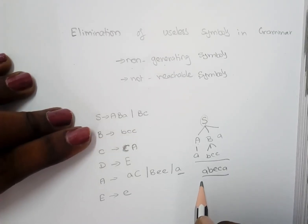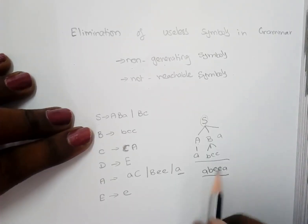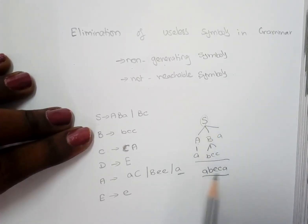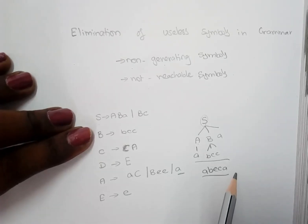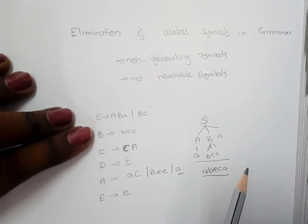For any one variable, on the substitution of any production, if that variable derives to some set of terminal symbols, we call that a generating symbol. And whichever production doesn't generate for at least one input, we call that a non-generating symbol.